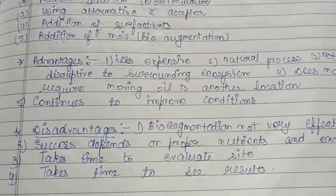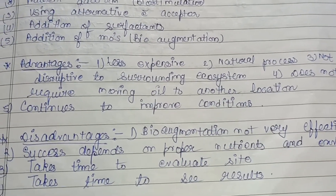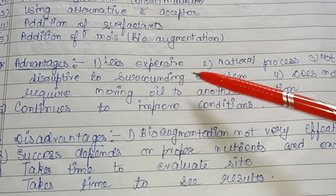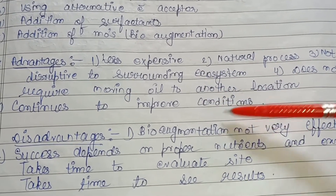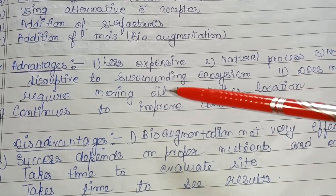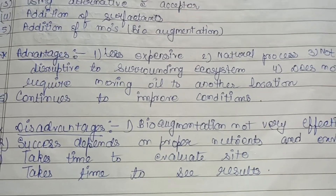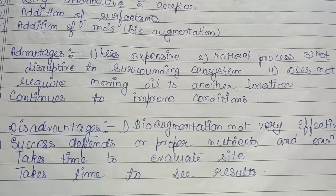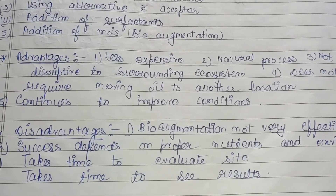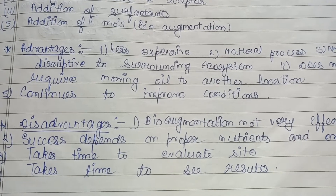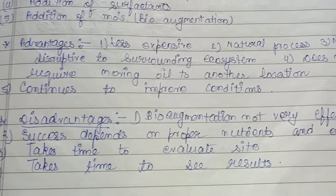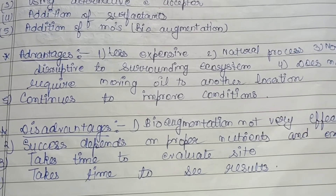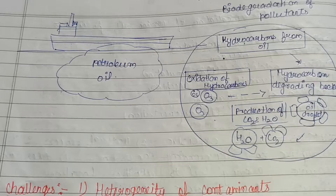The advantages of bioremediation of marine oil pollutants are: it is a less expensive method; it is a natural process; it is not disruptive to the surrounding ecosystem; it does not require moving oil to another location, allowing on-site treatment; and it continues to improve conditions. Disadvantages include: bio-augmentation is not always very effective; its success depends on proper nutrients and environmental conditions; since it involves natural microorganisms only, it takes time to evaluate the site; and it takes time to see results.